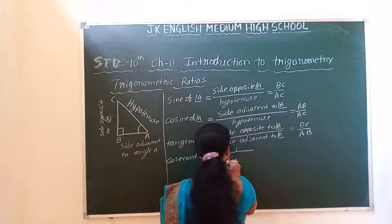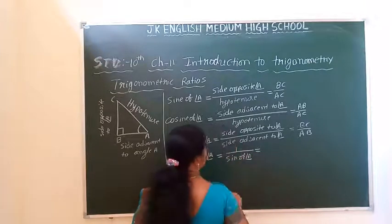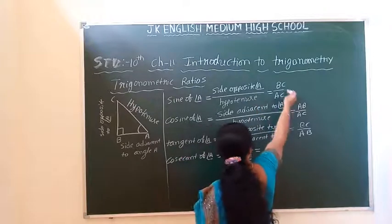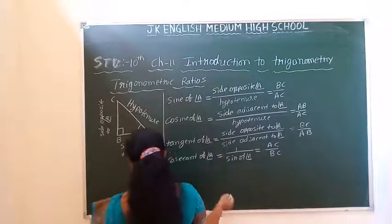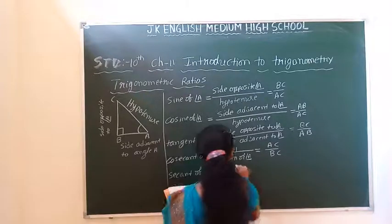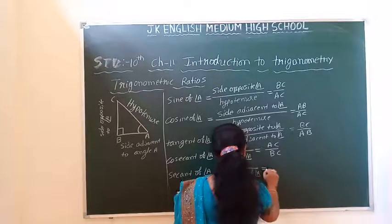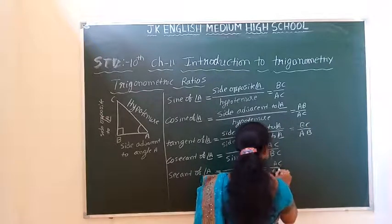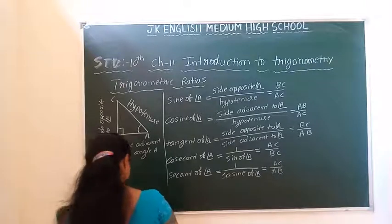The reciprocal of sine of angle A is cosecant of angle A. Cosecant A equals hypotenuse divided by side opposite to angle A, that is AC divided by BC. Then secant of angle A is the reciprocal of cosine of angle A, which is hypotenuse divided by adjacent side. Cotangent of angle A is the reciprocal of tangent of angle A.